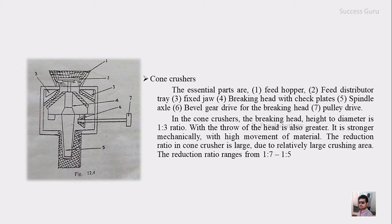It is stronger mechanically with high movement of materials. The reduction ratio of the cone crusher is very large due to the relatively large crushing area. The reduction ratio ranges from 1:7 to 1:5. If you put material of say 7 centimeters in the feed hopper, the material you get is in the ratio of 1 centimeter, that is the 1:7 ratio.